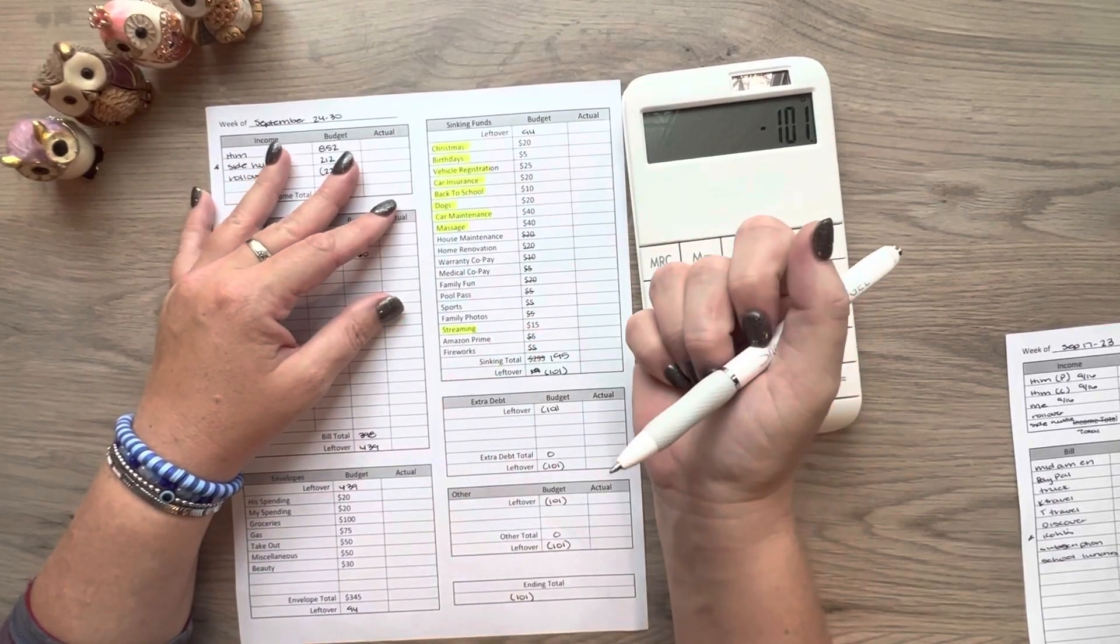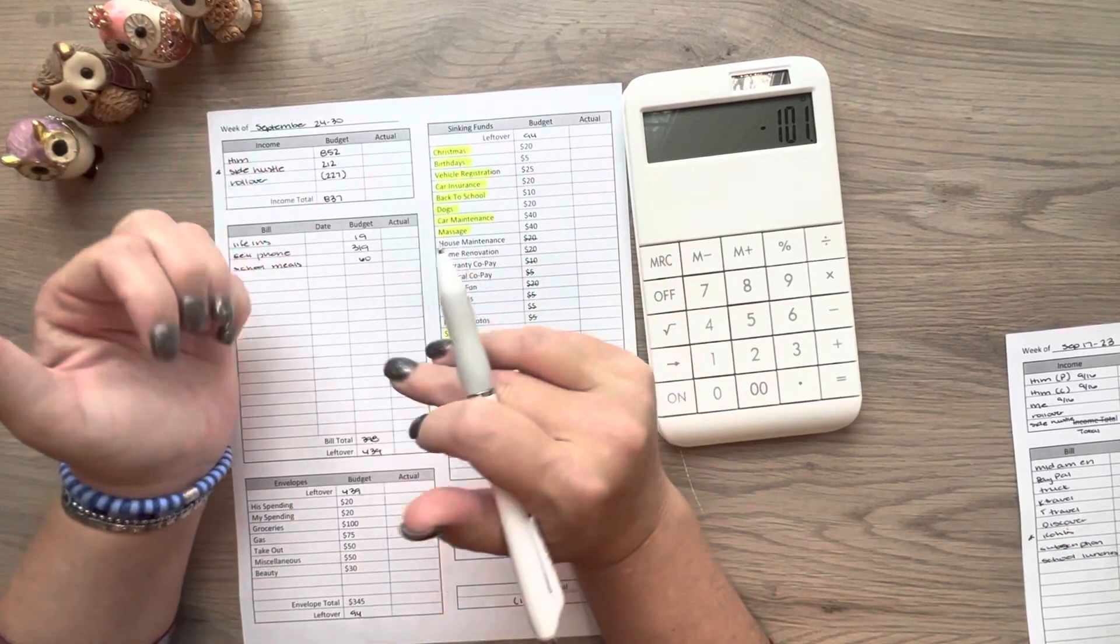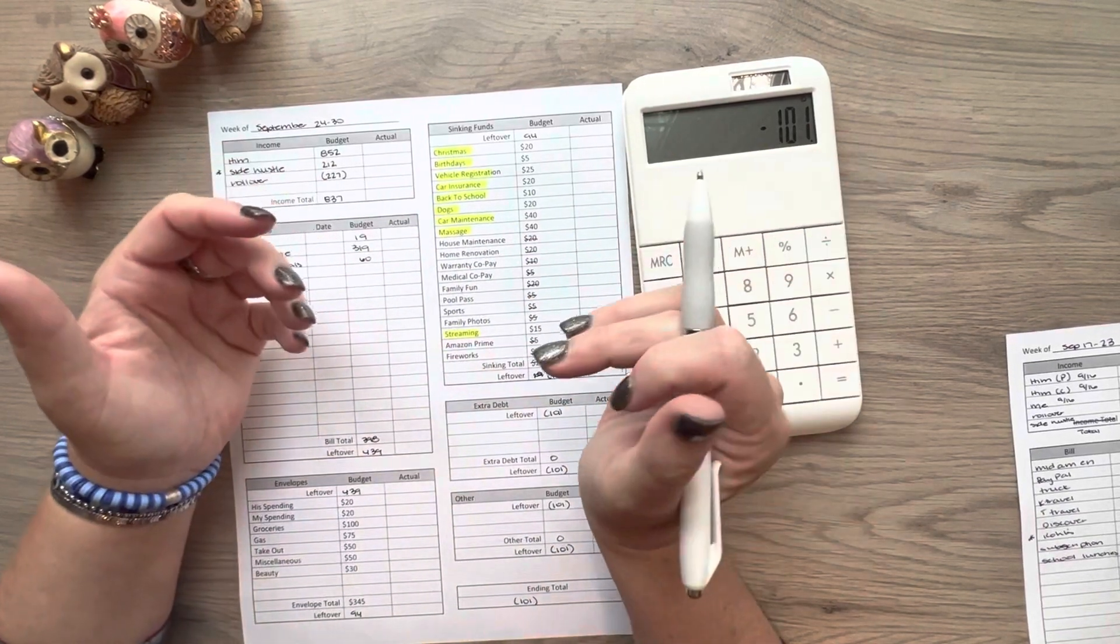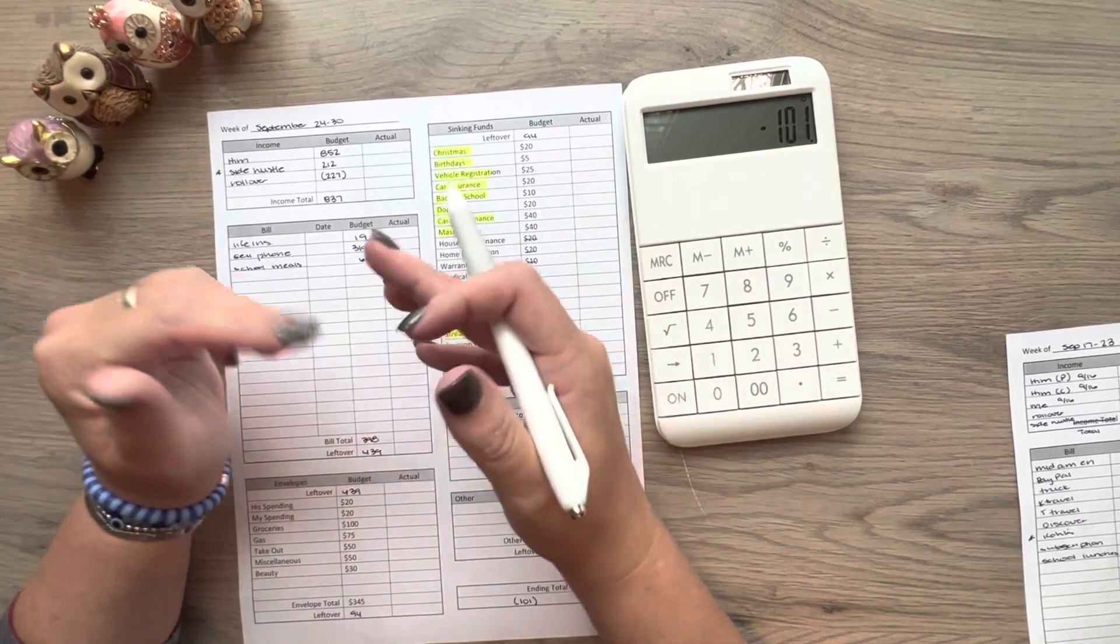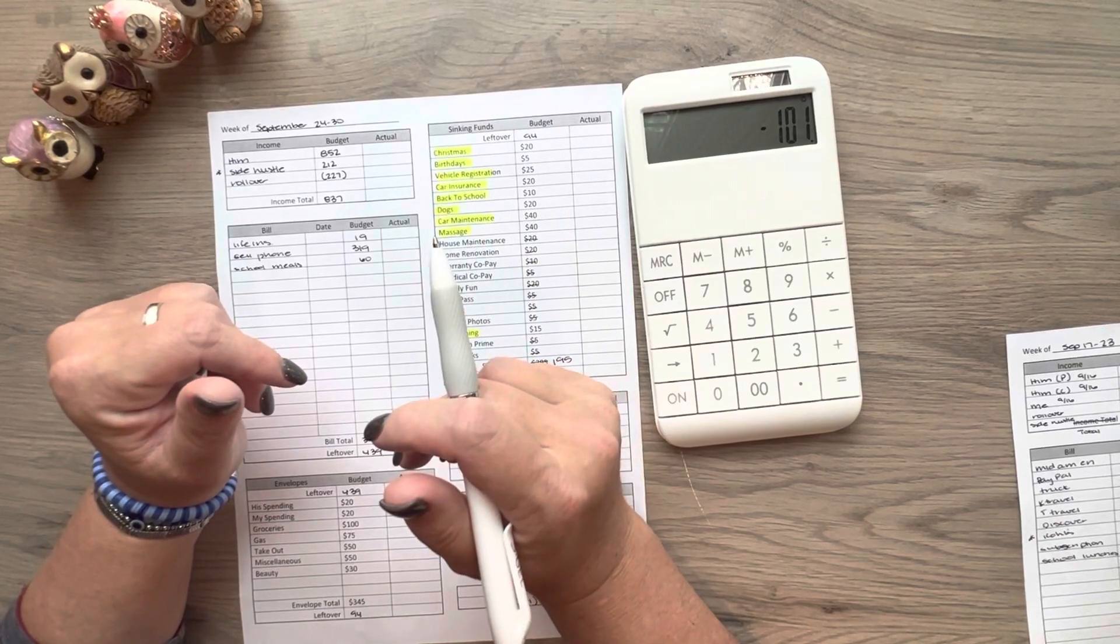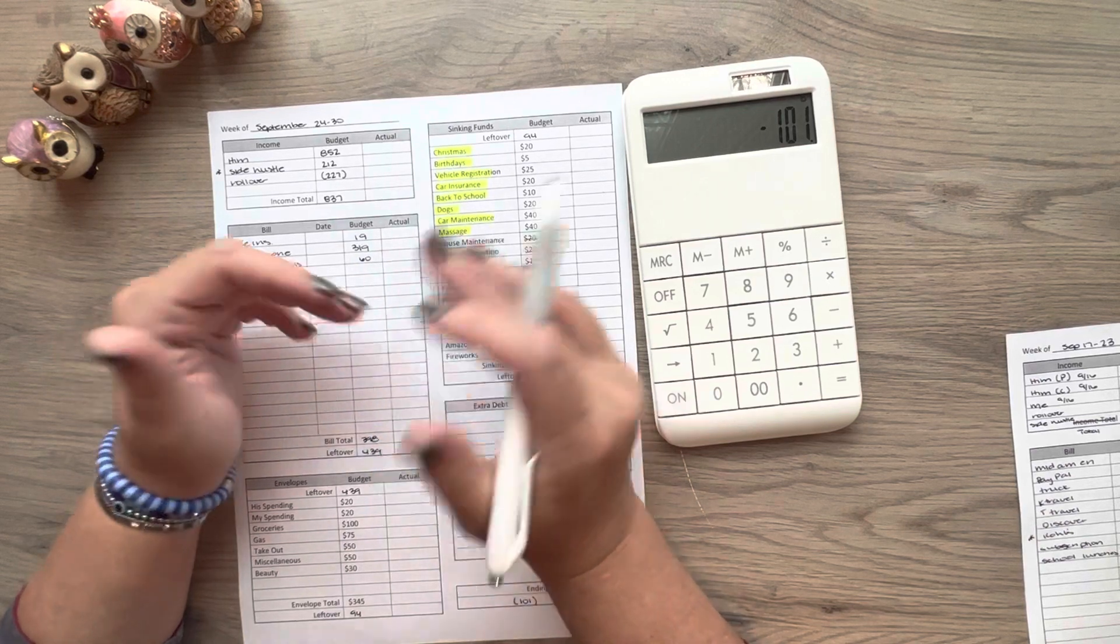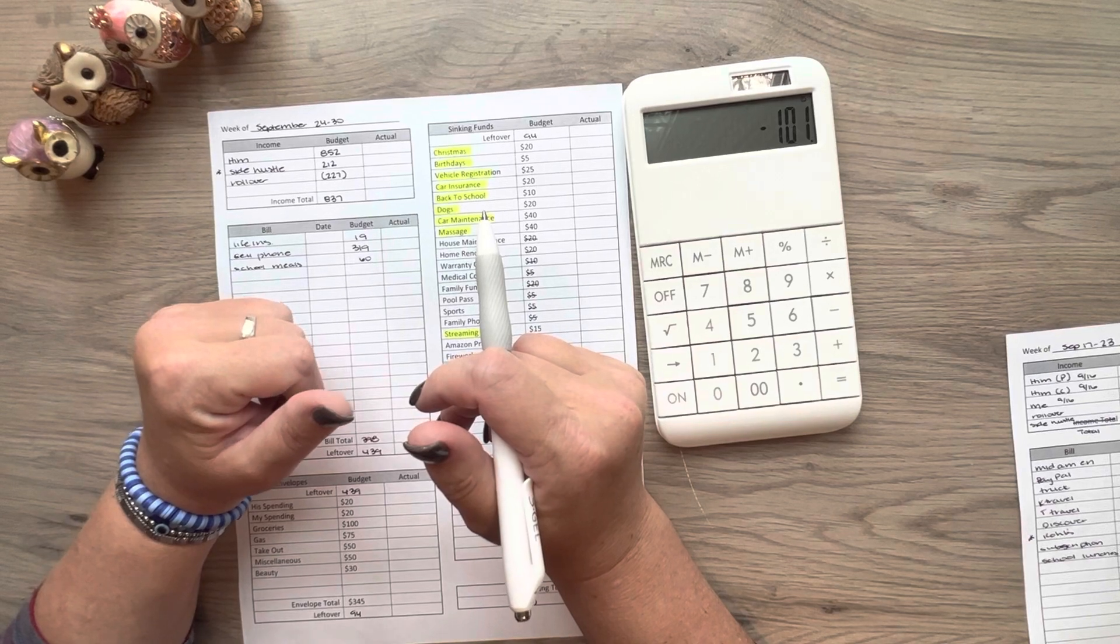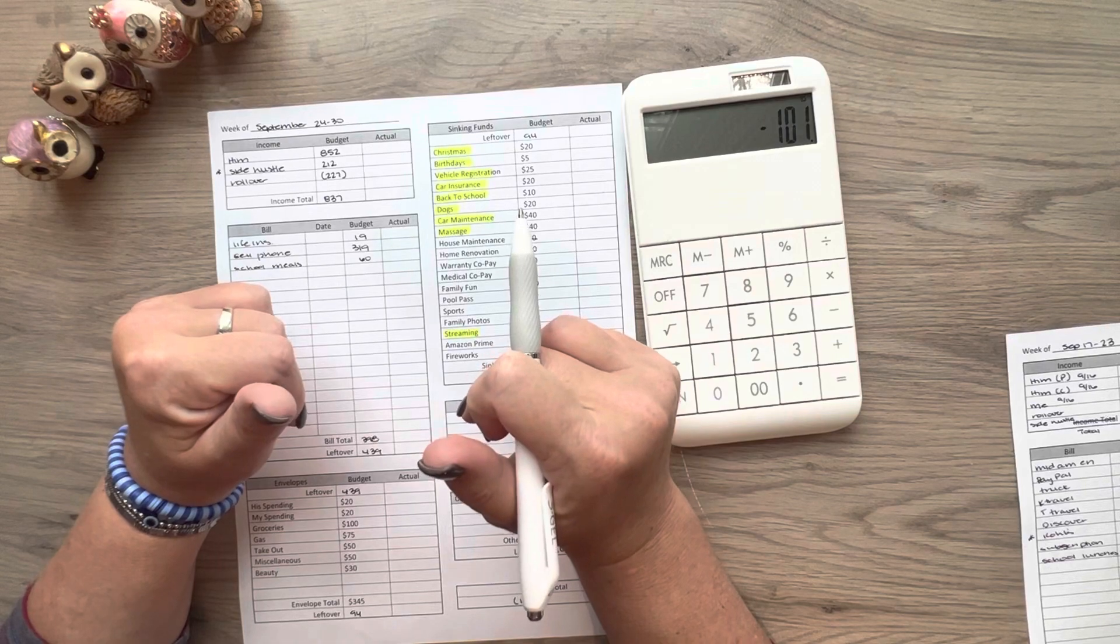So this month was really wonky. Normally we wouldn't be negative at the end of the month. If you guys remember, my husband got a new job. And so there was a week where he wasn't paid at all because most jobs they pay the week after or two weeks after, depending on the pay period. He gets paid weekly. So that one week towards the beginning of the month, he was unpaid. But the good thing is we did pay off all of our debt that we were wanting to pay towards this month. We met all those goals and I'm very excited about that.